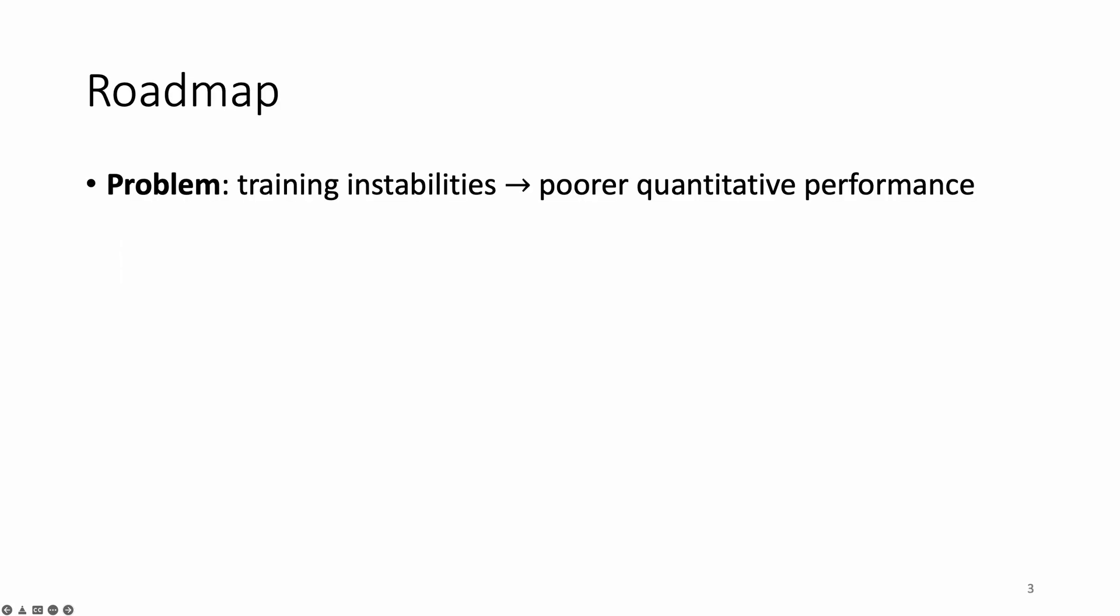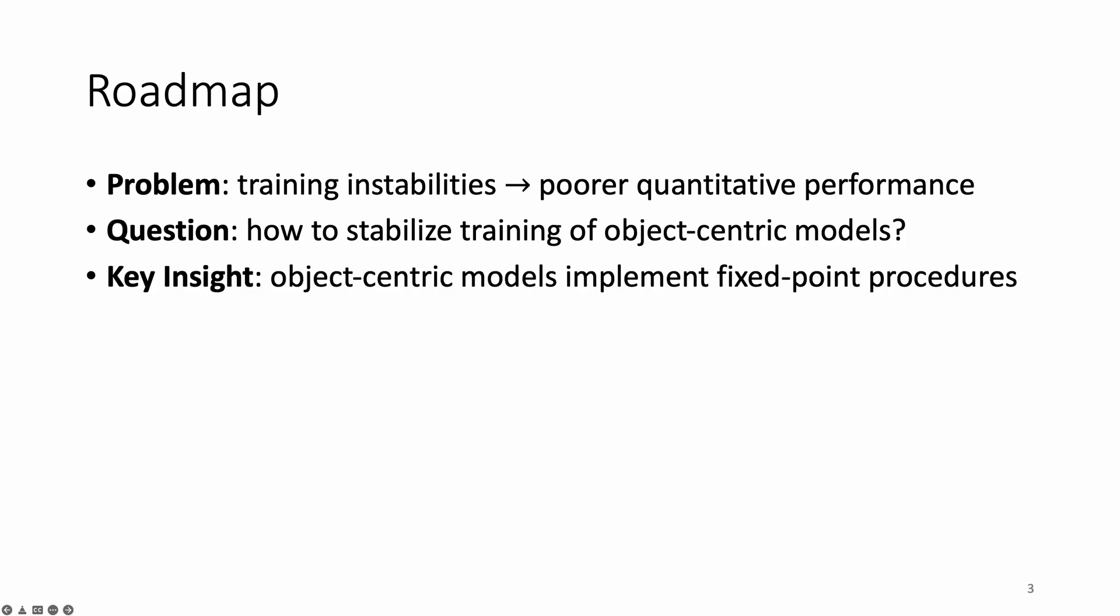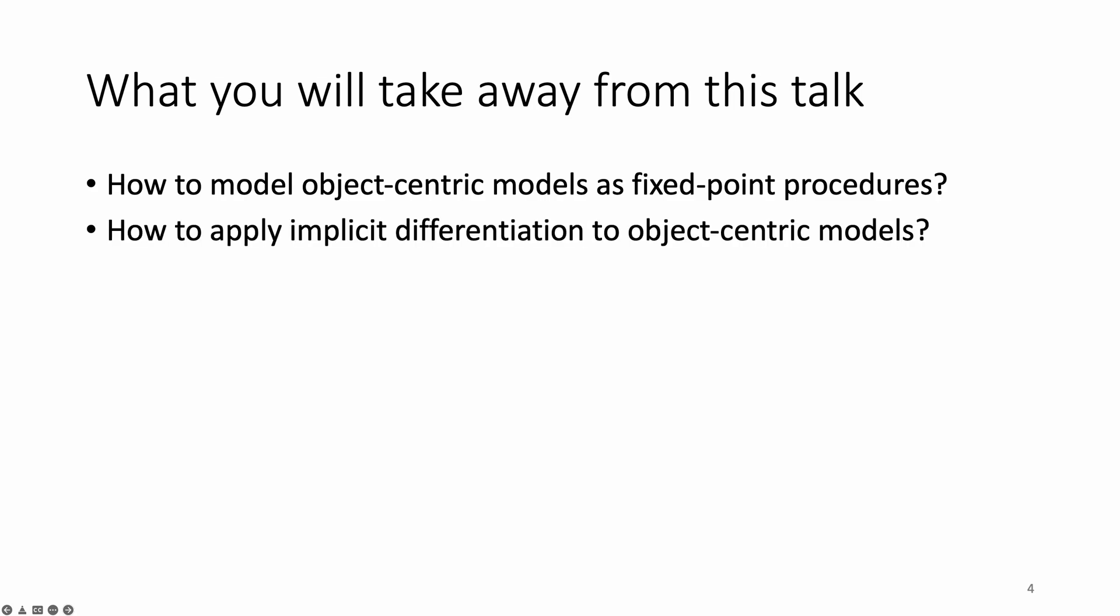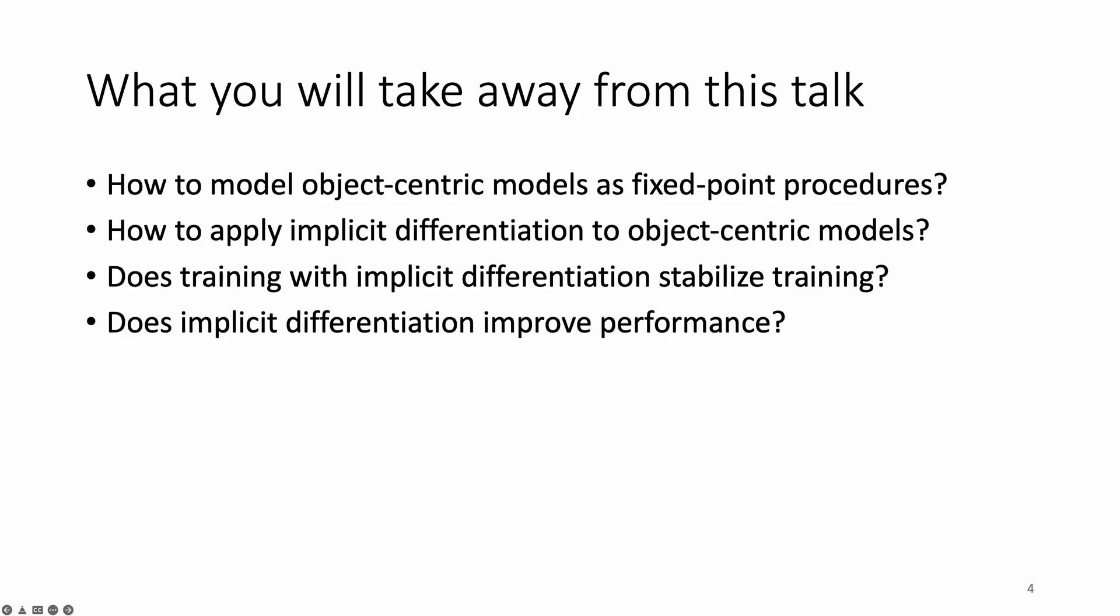This is what we will talk about. The problem is difficulty of optimization. The question is how to solve that problem. Our key insight is to view object-centric models as fixed point procedures, and the actionable consequence of this insight is to use implicit differentiation to stabilize training. By the end of this talk, I will attempt to answer how we can model object-centric models as fixed point procedures, how to apply implicit differentiation to object-centric models, whether training with implicit differentiation does stabilize training, whether implicit differentiation improves performance, and whether this benefit generalizes across datasets, architectures, and tasks.